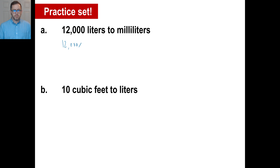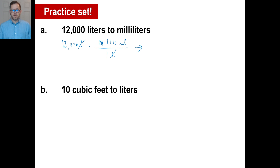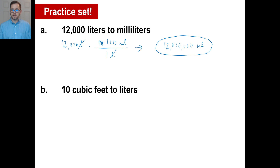Practice problem A: 12,000 liters to milliliters. We know that one liter is the same thing as a thousand milliliters. So the answer is 12,000 times 1,000. We can do that in our heads: 12 times 1 is 12, plus three zeros here and three zeros there — that's just 12 million. That's a lot of milliliters — like a big drink at a 7-Eleven.